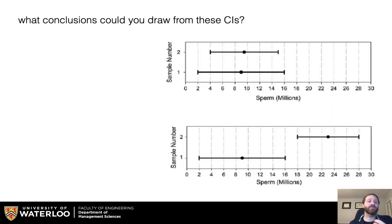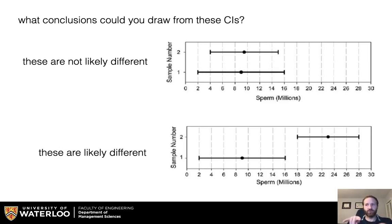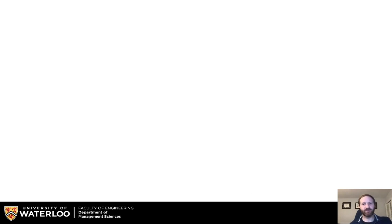What conclusions could you draw from these confidence intervals? The top ones are not likely different because they overlap quite substantially, while the other ones are quite likely different — they have confidence intervals that don't overlap. So you might say with 95% confidence these two values are different. This corresponds to some of our hypothesis testing, but in a much more intuitive way, and it gives a sense of practical significance, which we'll talk about soon.